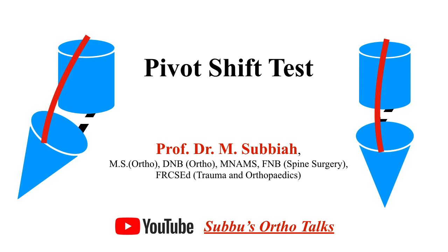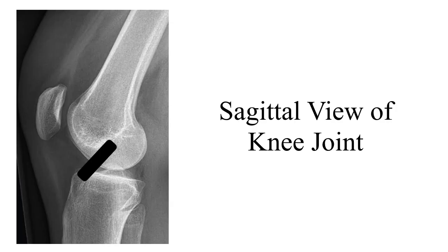Hi everyone, welcome back. Today we'll discuss the pivot shift test, which is a test to identify anterior cruciate ligament rupture. To understand the pivot shift test in a better way, we should be familiar with the anatomy and function of the anterior cruciate ligament in the sagittal view and the axial view of the knee joint. First, we'll discuss its role in the sagittal view of the knee joint.